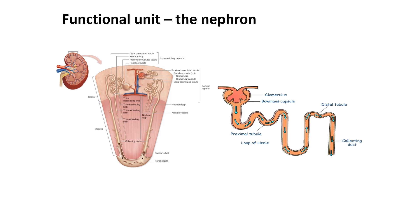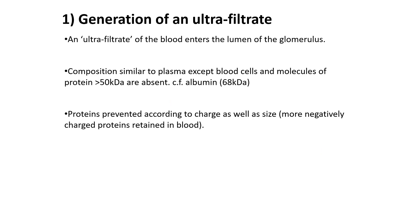For the next few slides we are going to look at the functional unit of the kidney, known as a nephron. As you can see here, the nephron is composed of the glomerulus, Bowman's capsule, proximal tubule, loop of Henle, and the collecting duct. An ultrafiltrate is formed when blood enters the lumen of the glomerulus. This is similar in size and composition to plasma, except blood cells and protein molecules greater than 50 kilodaltons — such as albumin at 68 kilodaltons — are absent. Proteins are also prevented from passing through according to their charge as well as size, and more negatively charged proteins are retained in the blood.